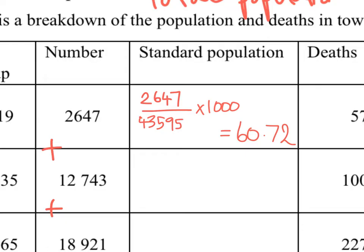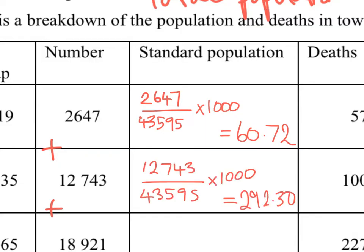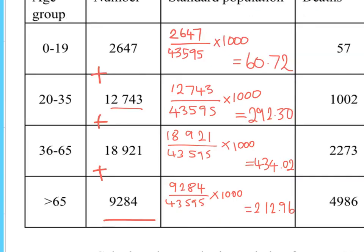Doing the same for the 20–35 age group: 12,743 divided by 43,595 times 1,000 gives 292.30. So if I took a proportional sample of 1,000 people, 292 of them would be aged 20 to 35 — a much higher proportion than the 0–19 group. You can pause the video to complete the remaining age groups yourself, and then check your answers.